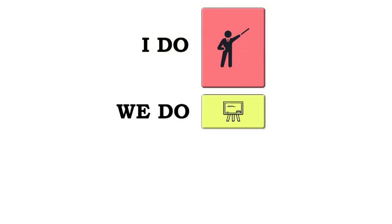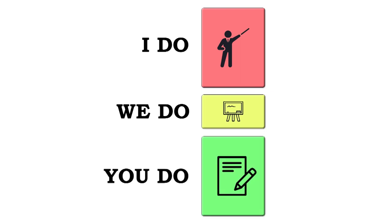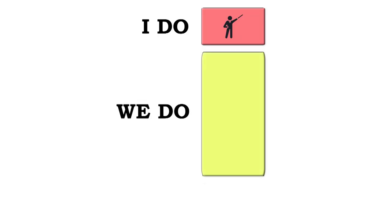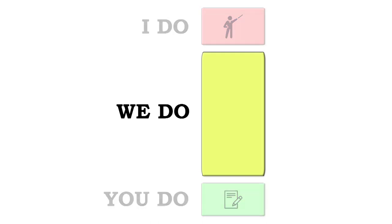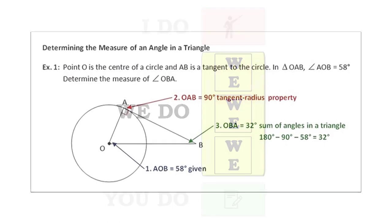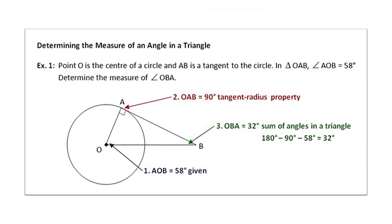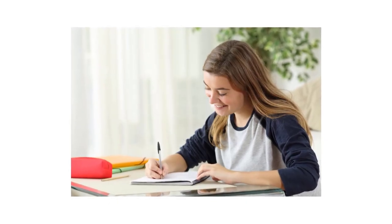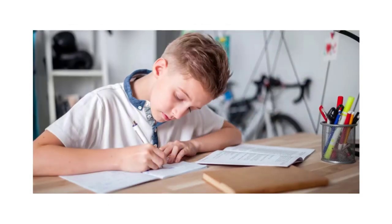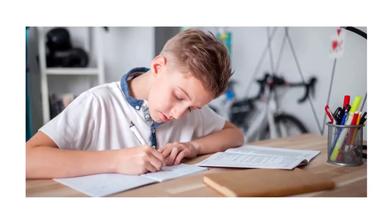Second, educator Ollie Lovell from Australia points out that we normally focus on an 'I do, We do, You do' model — I teach you something, we do one or two worked examples together on the board, then you go do practice problems. But if students haven't built those long-term memories yet, the 'You do' phase might be pointless. He suggests changing the proportions: less 'I do,' a whole lot more 'We do,' and less 'You do.' In that extended 'We do,' we use worked examples, spending more time supporting students as they build long-term memories — and only when they've locked those down do we say, 'Okay, your turn.'